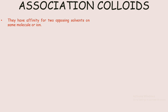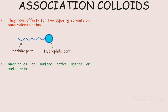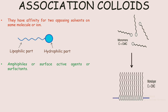The third group is association colloids. Certain molecules or ions have two distinct regions of opposing solution affinities within the same molecule or ion. These are also known as amphiphiles, surface-active agents, or surfactants. When present in a liquid at low concentration, the amphiphiles exist separately and are of sub-colloidal size.